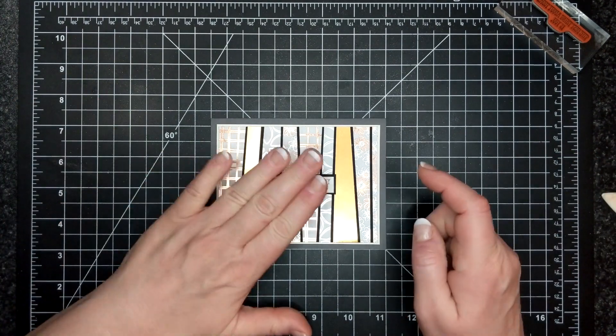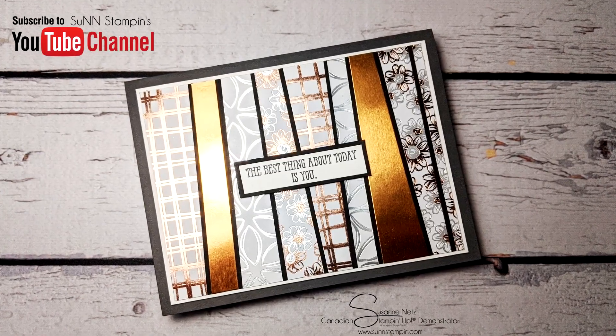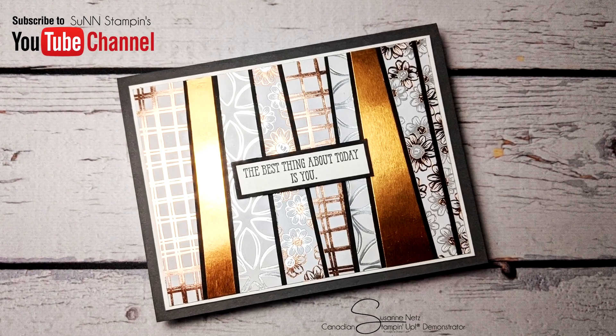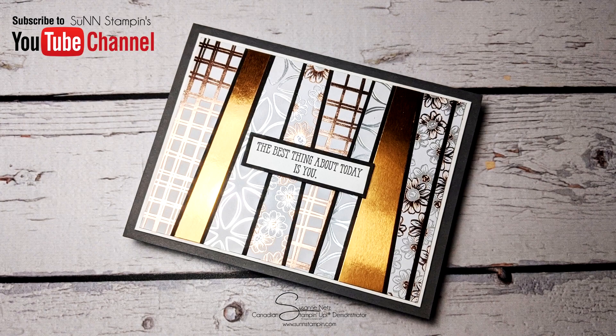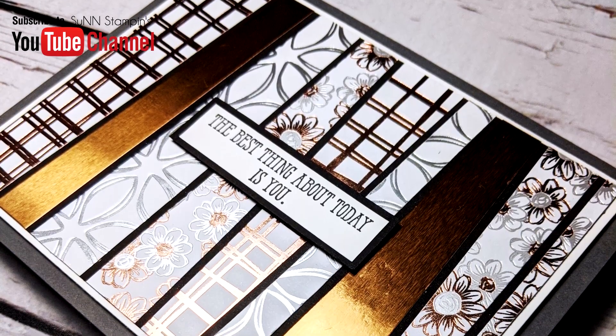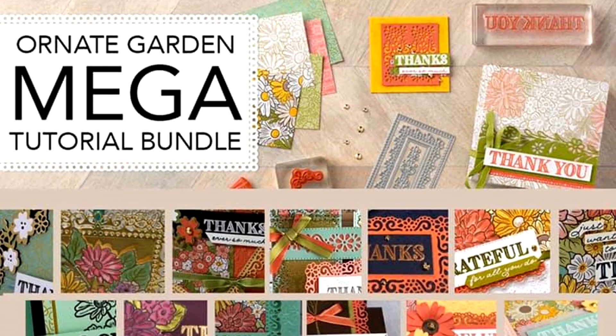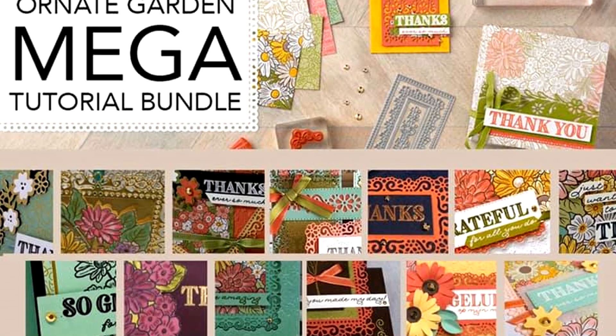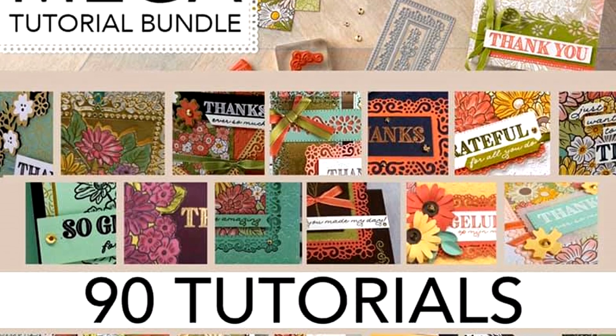One last thing, there is a pre-release coming out. Stampin' Up came out with a beautiful collection called Ornate Garden. I'll put the link in the description. I am a part of a mega bundle so I am selling the mega bundle for $30 Canadian or free with $120 purchase. I'll put the link in the description bar and you can check it all out. Thanks so much for joining me and I'll catch you again soon.